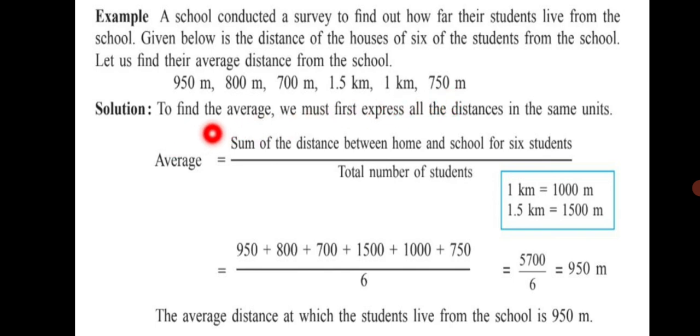Remember, to find the average we must express all the distances in the same units. Hence in this box you can see 1 kilometer is given as 1000 meters. So we will take 1 kilometer as 1000 meters. That means 1.5 kilometers will equal 1500 meters.